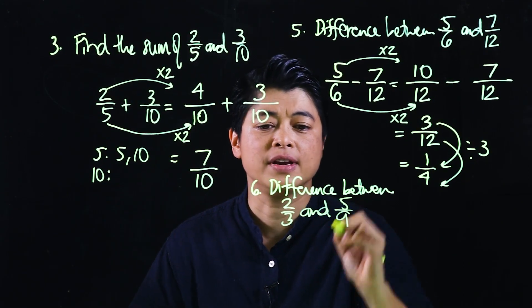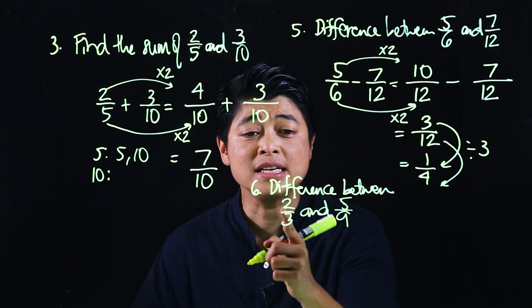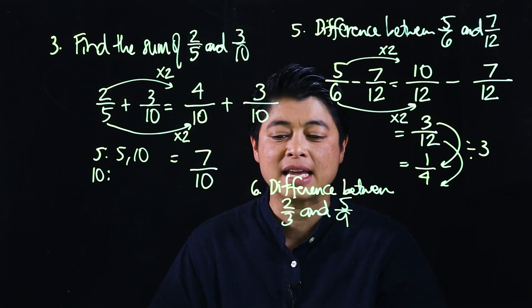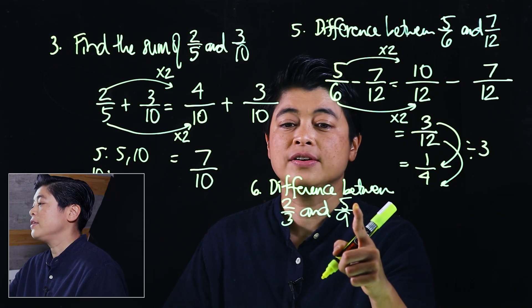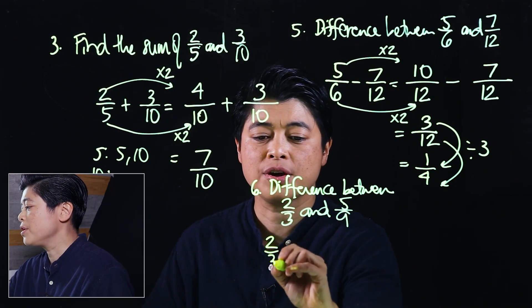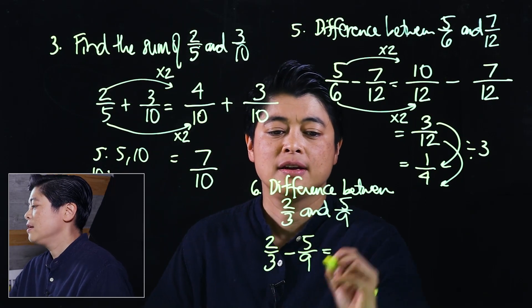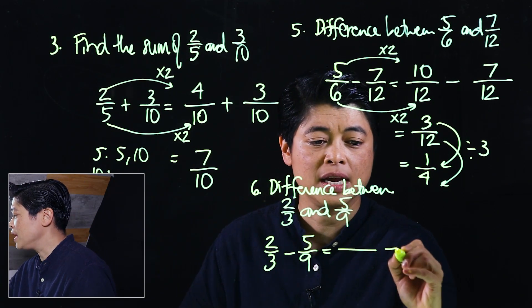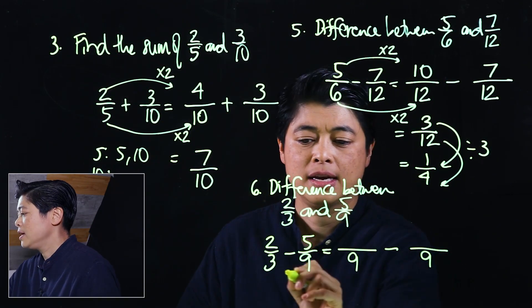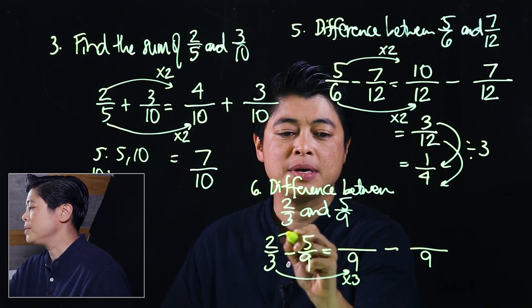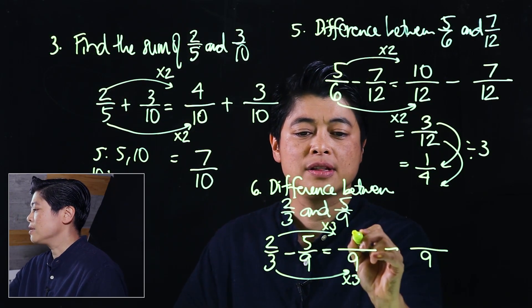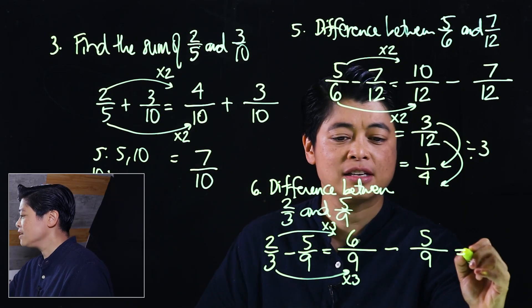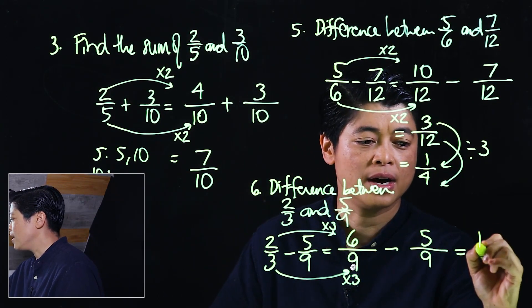Here it's easier to cross multiply. This is 18, this is 15. 18 clearly is greater than 15, so this will be two-thirds minus five-ninths. Counting by threes, I know I'll hit nine, so the common denominator must be nine. I multiply that by three, which means I multiply this by three as well. That makes it six and that makes this five. Our final answer is six minus five is one, and we keep the same denominator.